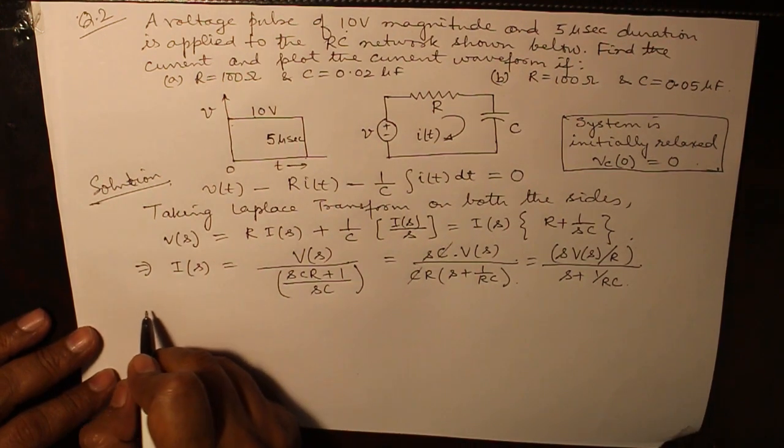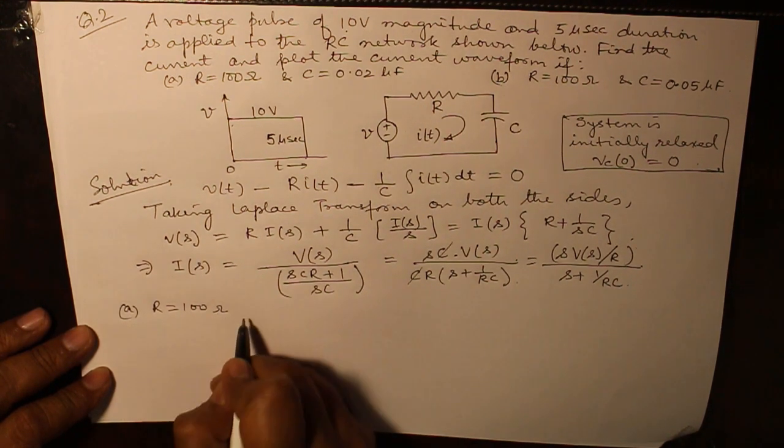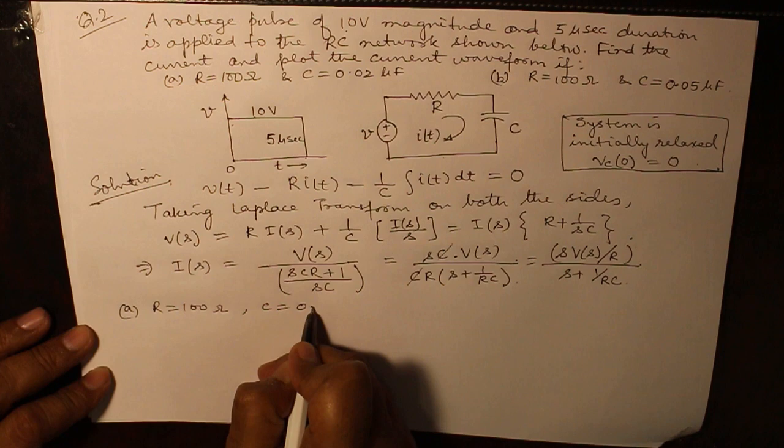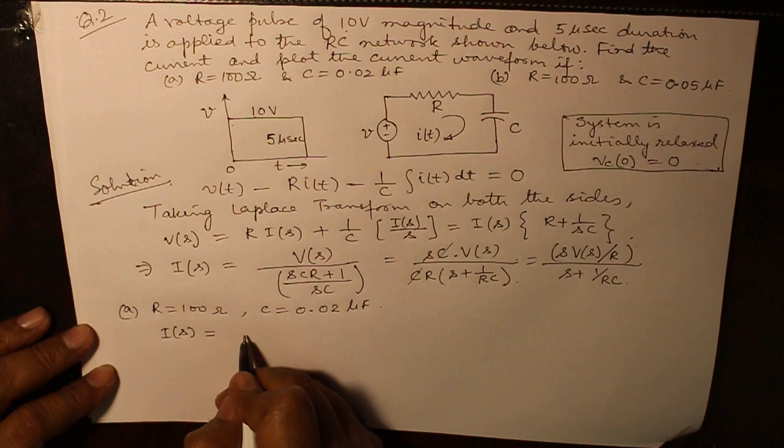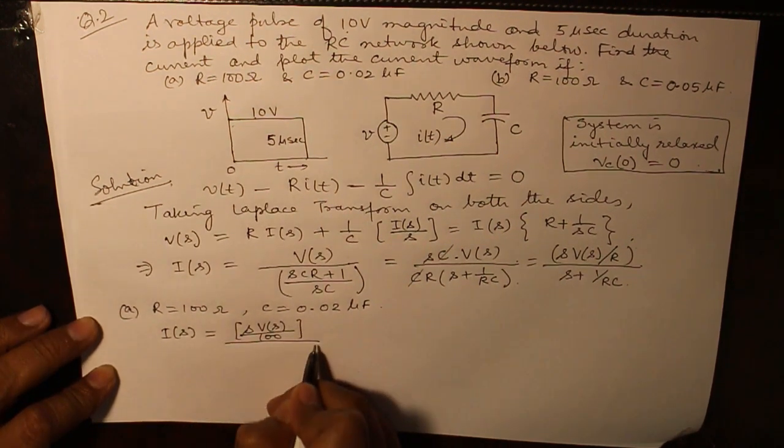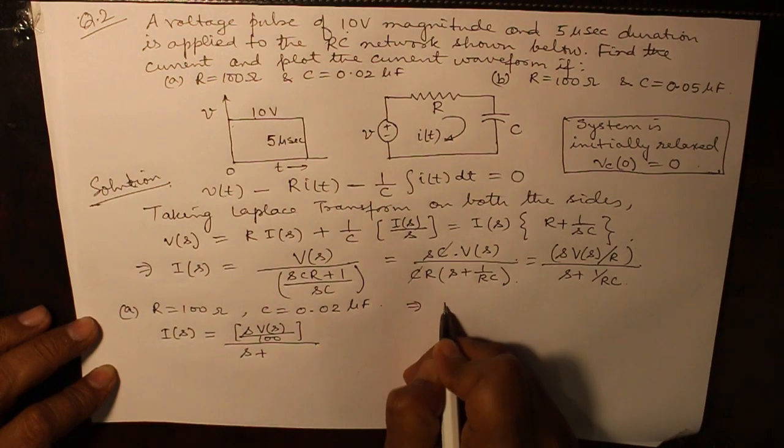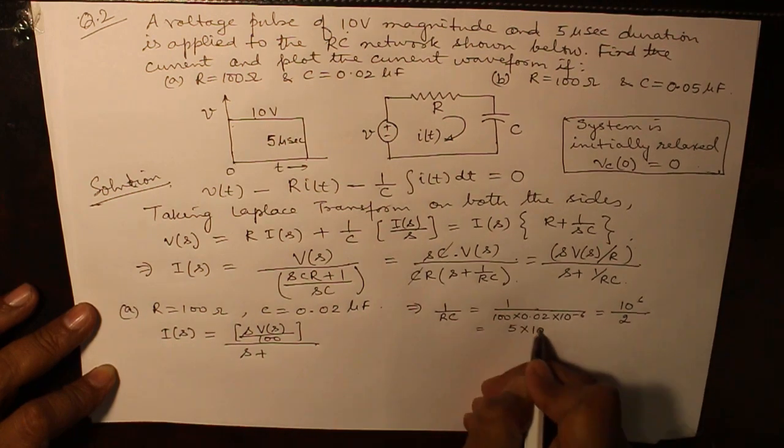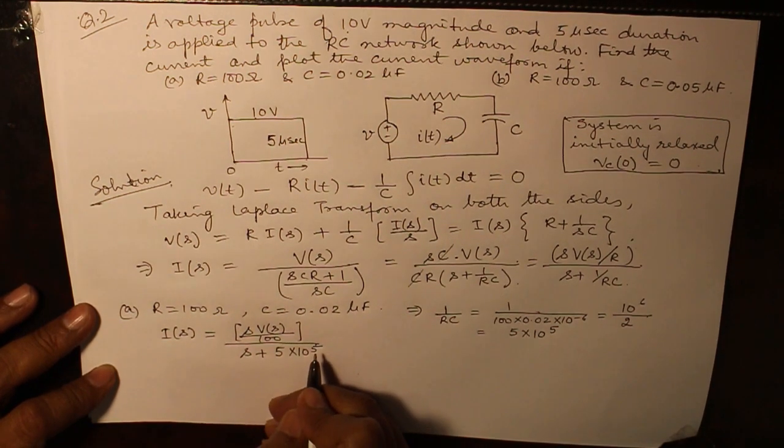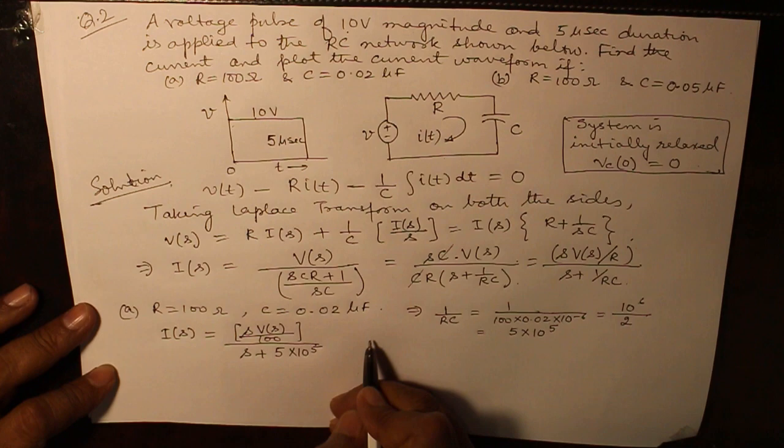Now, Case 1: R is 100 ohm, C is 0.02 microfarad, divided by s plus... so, what would be the value of 1 over RC. Now, just by substituting the value of V(s), we can obtain the value of I(s). And on taking Laplace inverse, we can obtain the value of i(t). Name it equation 1. Now, what is the value of V(s)?